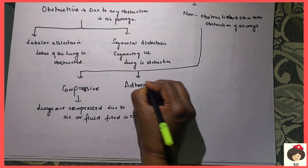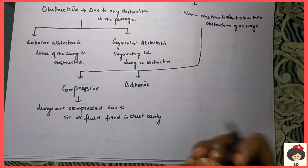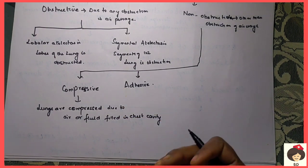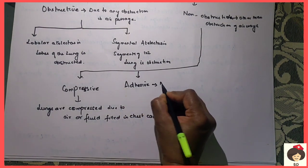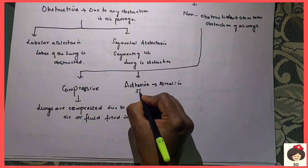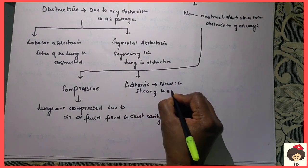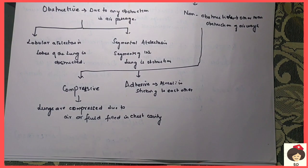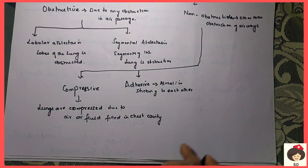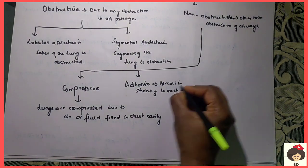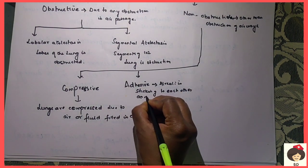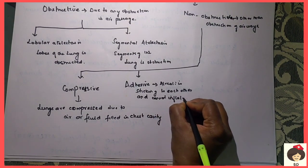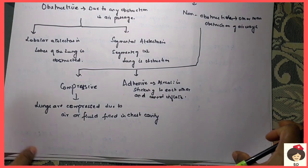Next is adhesive Atelectasis. Adhesive means there are adhesions within the alveoli — the alveoli are sticking to each other due to some chemicals. Mainly occupational chemicals like asbestosis or sarcoidosis: due to occupation, the person is constantly exposed to these chemicals, which can stick to the alveoli. Because the alveoli are sticking to each other, they cannot inflate during inspiration. We call it the adhesive type of Atelectasis.